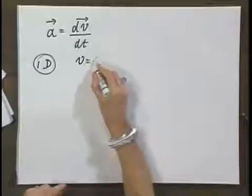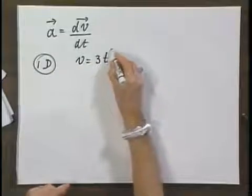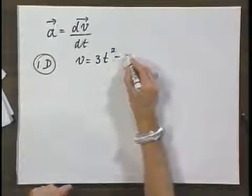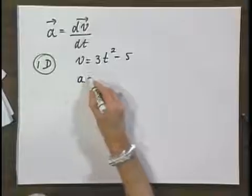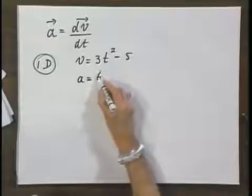So we have now V, for instance, equals 3t squared minus 5. And so we would then have A equals 6t.